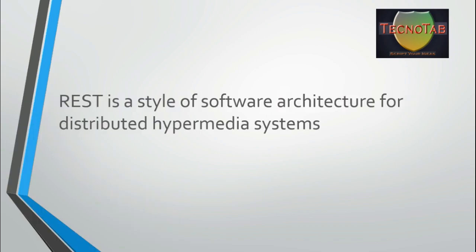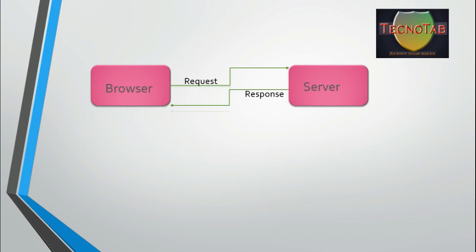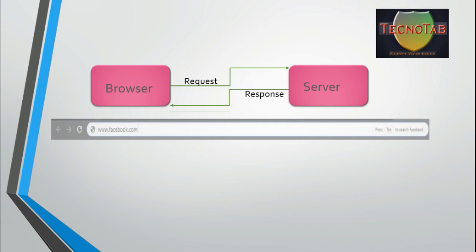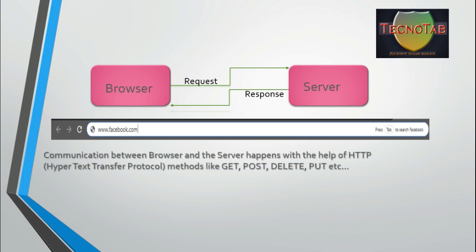Let's understand this with the diagram shown here. Suppose you are using a Google Chrome browser and you are searching for a link — you enter the URL in the address bar. That URL is basically called a request. Your request goes to the server, which looks for an exact match of the URL you passed and sends you the related response. This communication between the browser and the server happens with the help of HTTP — Hypertext Transfer Protocol.